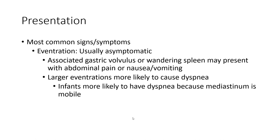Clinical Presentation: Eventration is usually asymptomatic. Associated gastric volvulus or wandering spleen may present with abdominal pain or nausea and vomiting. Large eventration is more likely to cause dyspnea because the mediastinum is mobile.